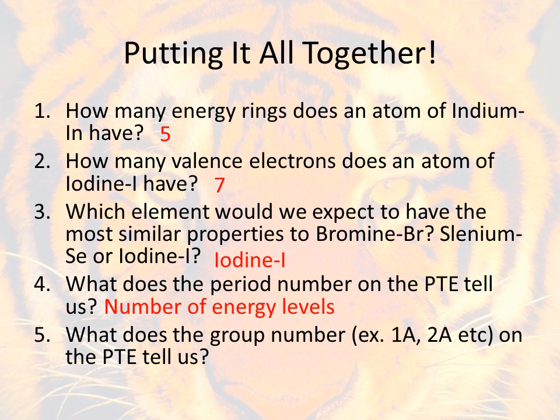Now your answer to number 4 can be a lot of different answers, but somewhere in number 4 you have to mention that the period number is going to tell you the number of energy levels. Same thing with number 5, you can have a lot of different answers, but somewhere in your answer you need to make sure that you've got it listed that the group number tells you the number of valence electrons.